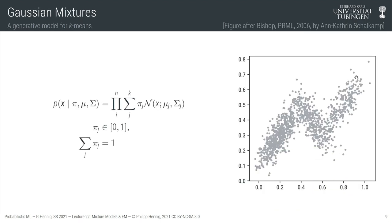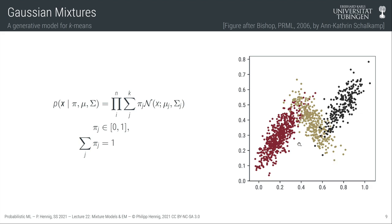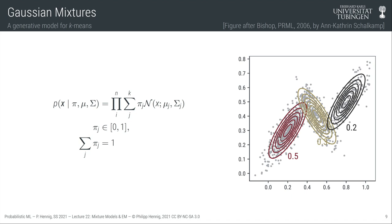Gaussian mixture models are designed for data sets where you can visually see that the data could have been generated by drawing from multiple Gaussian distributions — in this example, three Gaussian distributions shown in three colors — where each datum is drawn from exactly one cluster, but the decision of which cluster is given by a discrete probability distribution. The underlying probability density consists of these base measures drawn with probabilities that sum to one, for example 20%, 30%, and 50% for three clusters.